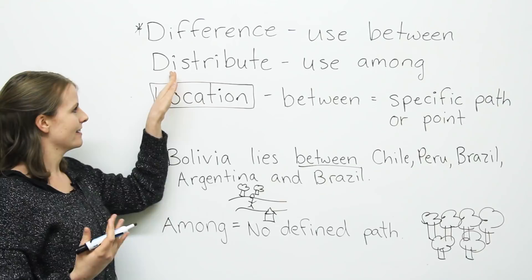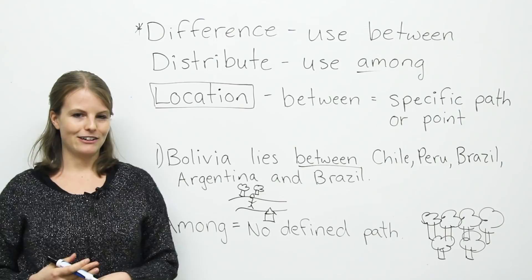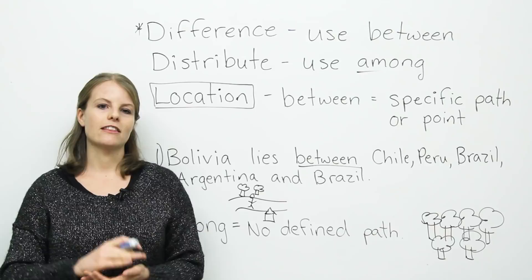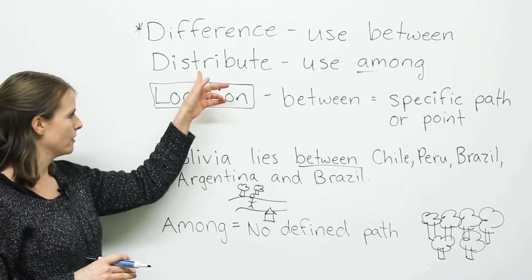Opposite to this, when you use the word distribute, use among. For example: 'The tips were distributed among the waitresses.' So if you see the word distribute, use among.